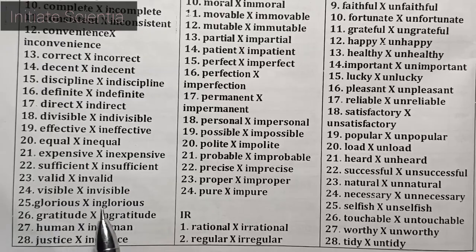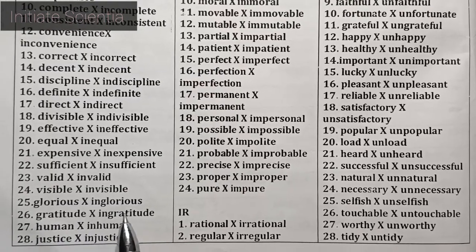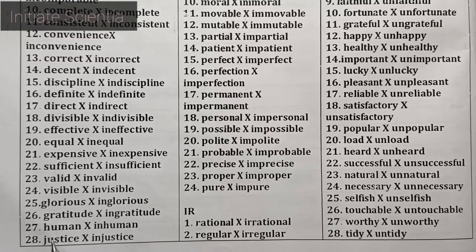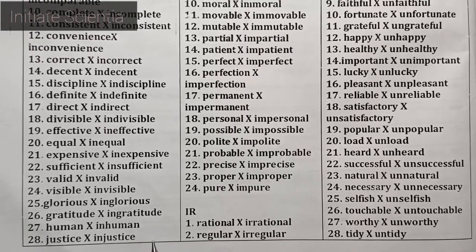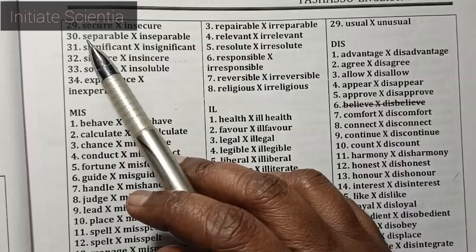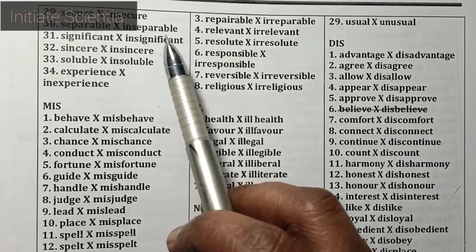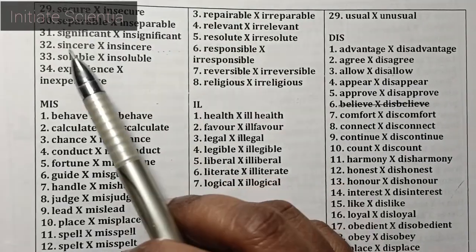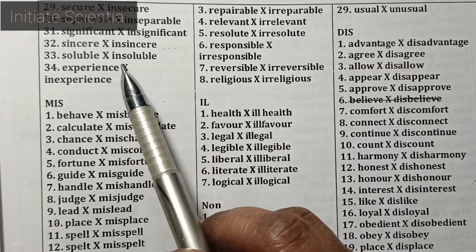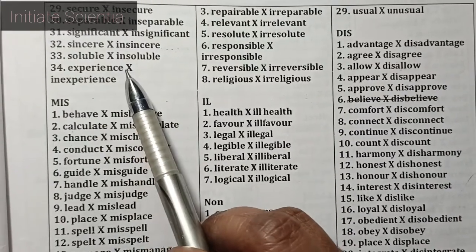Continuing IN prefix words: discipline – indiscipline, definite – indefinite, direct – indirect, divisible – indivisible, effective – ineffective, equal – inequal, expensive – inexpensive, sufficient – insufficient, valid – invalid, visible – invisible, glorious – inglorious, gratitude – ingratitude, human – inhuman, justice – injustice, secure – insecure, separable – inseparable, significant – insignificant, sincere – insincere, soluble – insoluble.